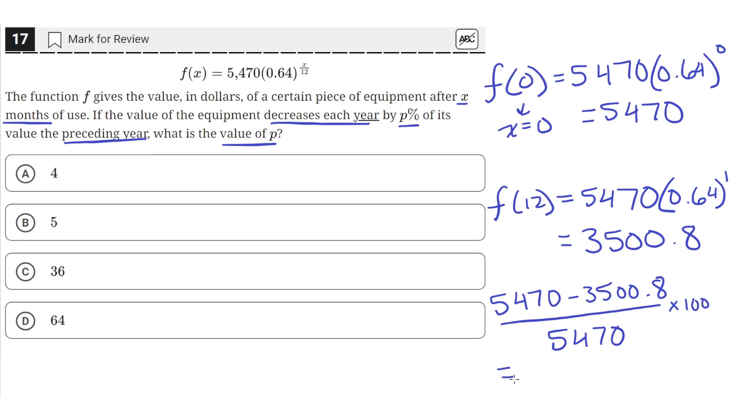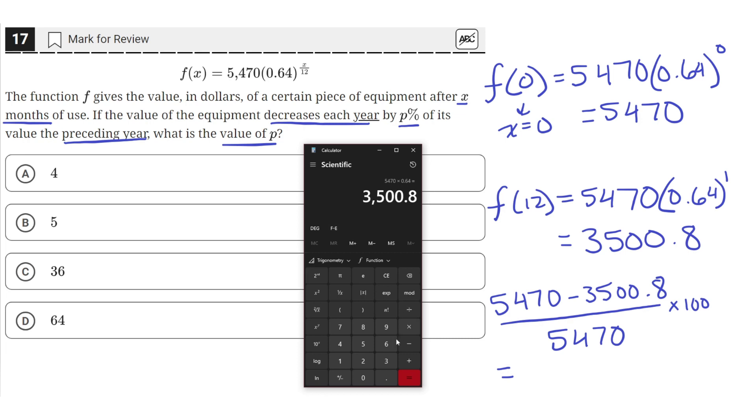So when we put this into our calculator, 5,470 minus 3,500.8. So 5,470 gives us that. We divide that by 5,470 and multiply. I divided by accident.